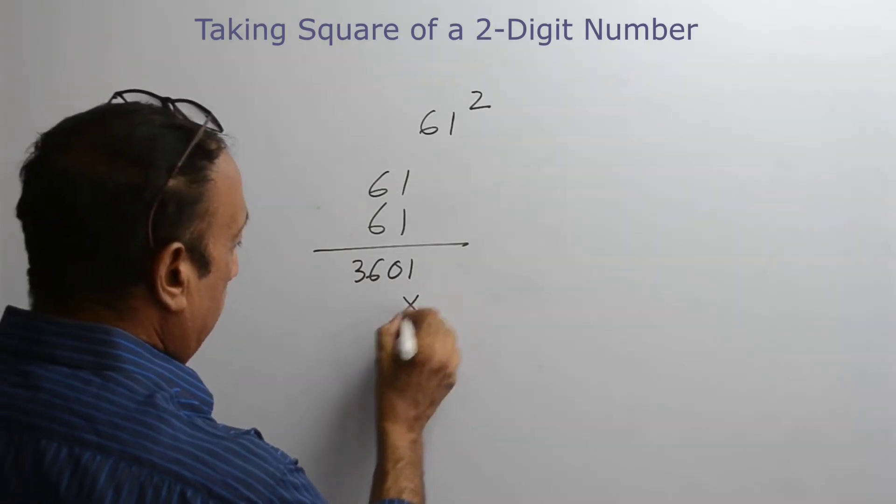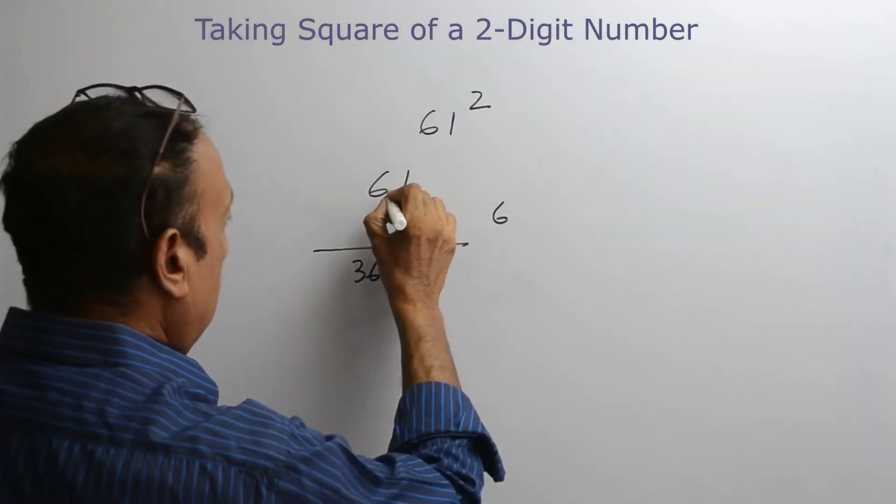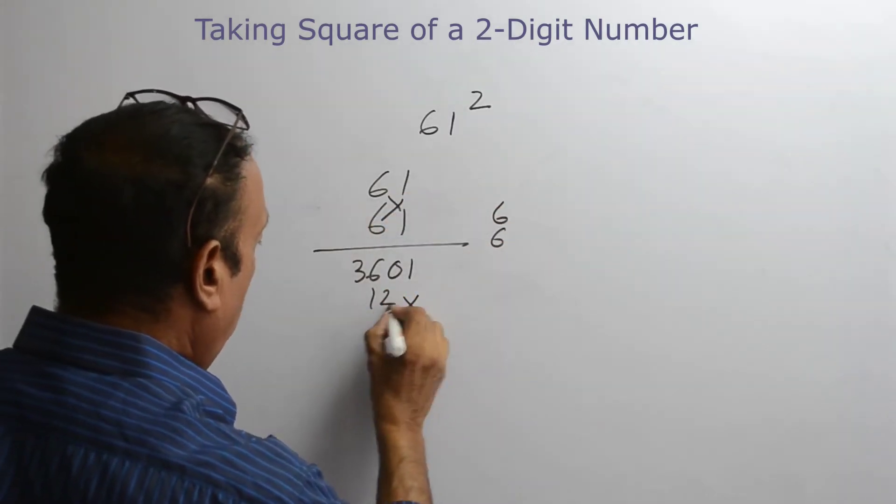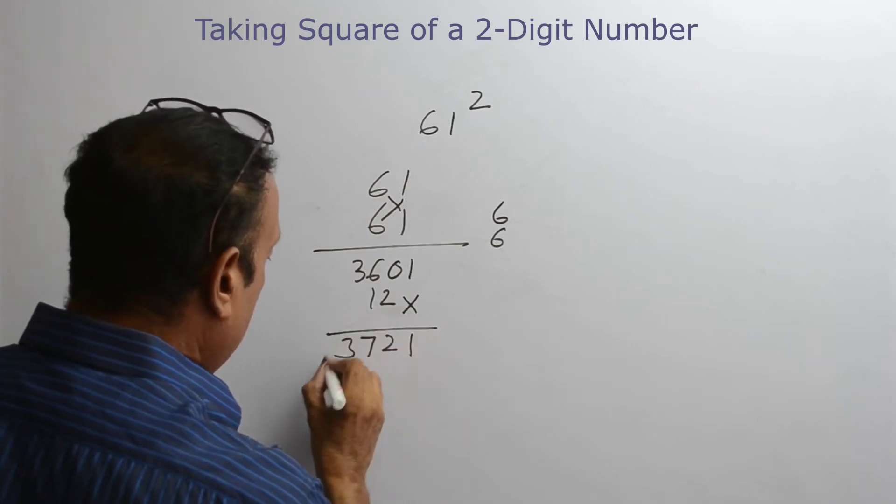So 1 cross over here, 6, 6, 12, so 3721.